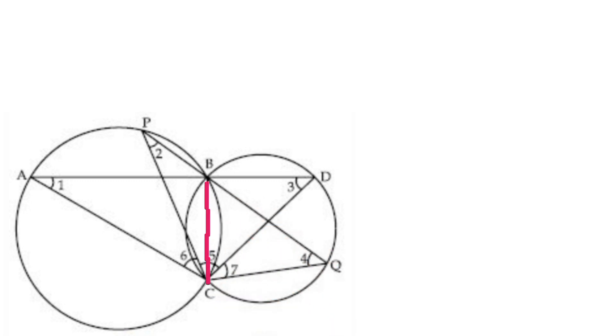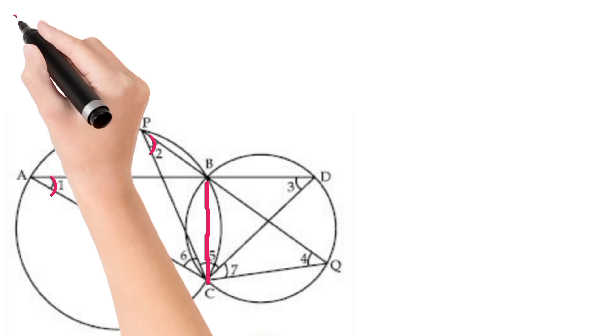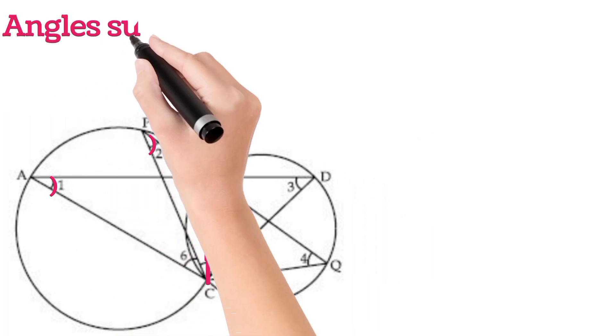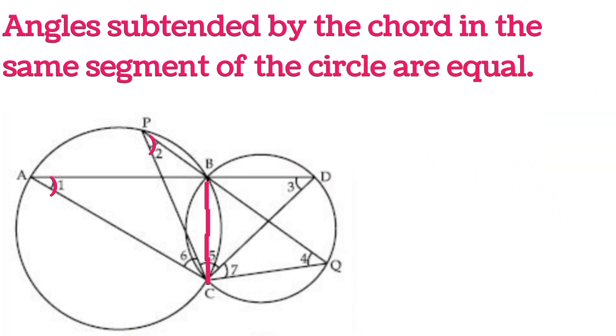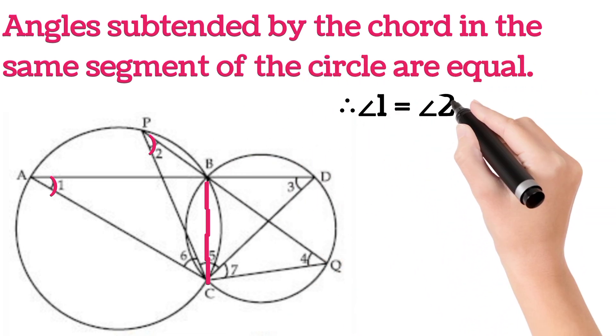BC is a chord which subtends two angles A and P in the same segment of the circle, so they will be equal to each other. As we know, angles subtended by the chord in the same segment of the circle are equal. Now we have angle 1 is equal to angle 2.